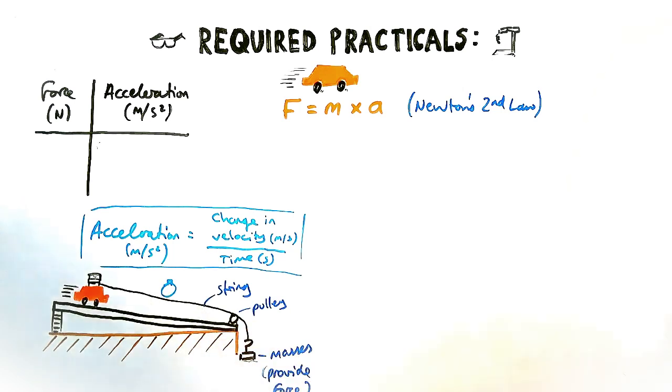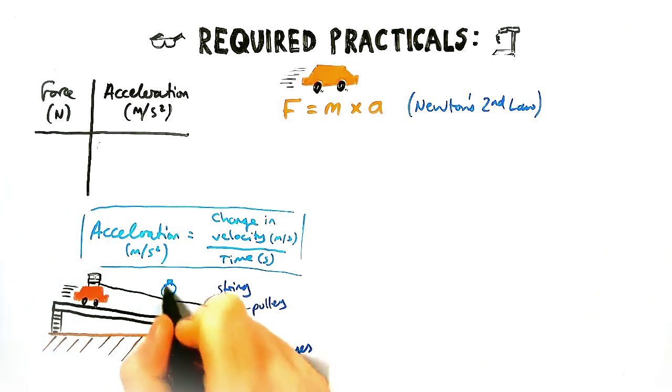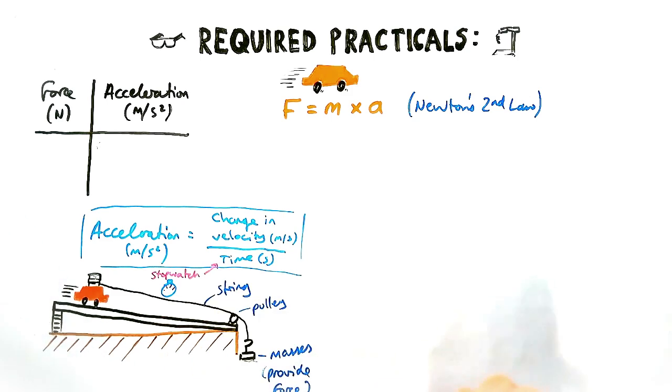Now hopefully it's obvious that the one easy thing to measure there is the time. We can use a stop clock for that or a stopwatch. So we need one person with a stopwatch measuring the car's journey over the period of time.